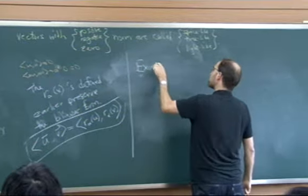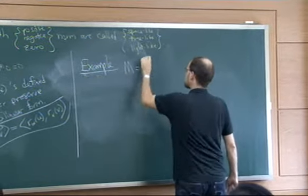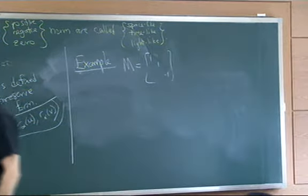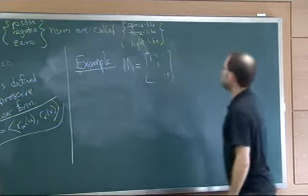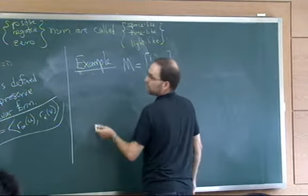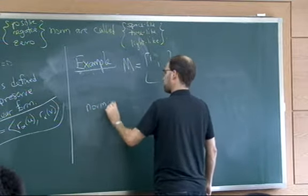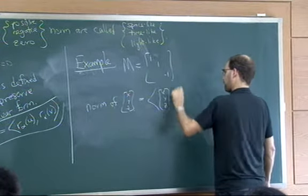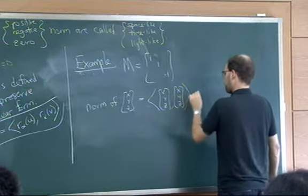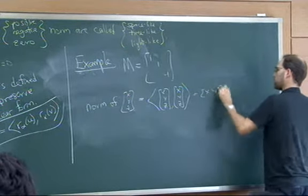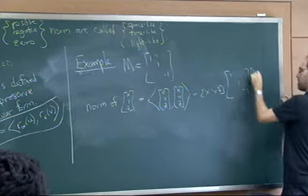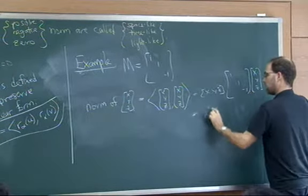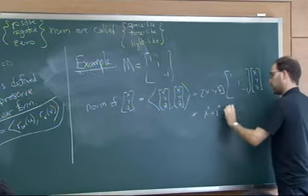Example 2: M = diag(1, 1, -1). The norm of the vector (x,y,z) is x² + y² - z². Having lots of zeros, ones, and minus ones on the diagonal gives very simple answers and makes analysis easy. If we put random numbers there instead, we'd get cross terms making the geometry much harder to analyze.